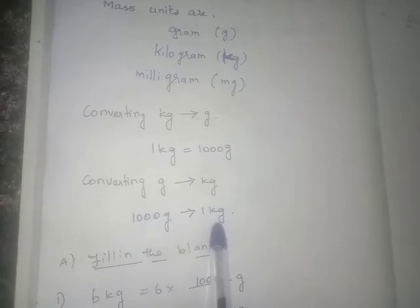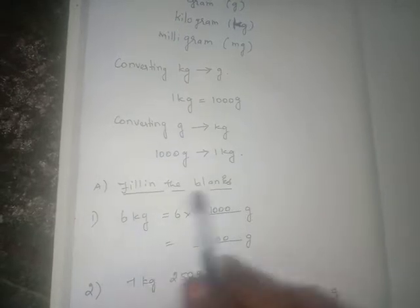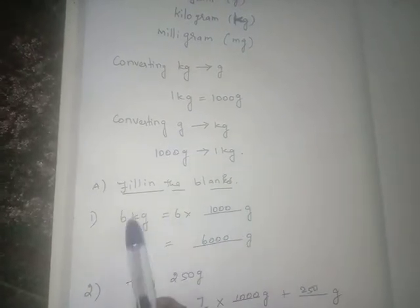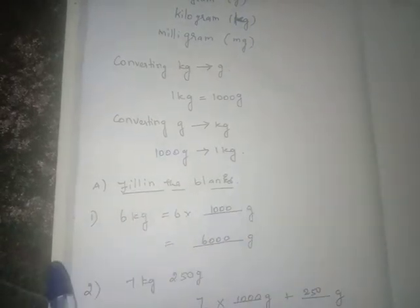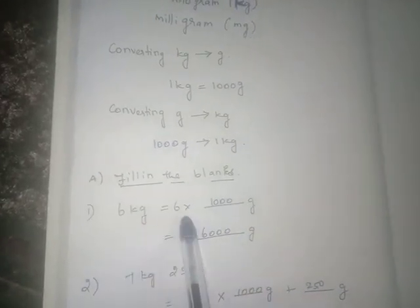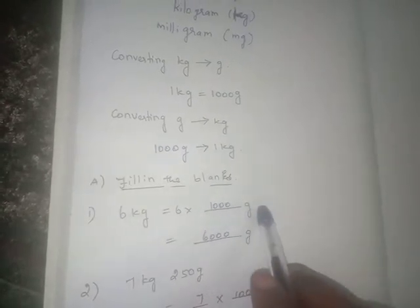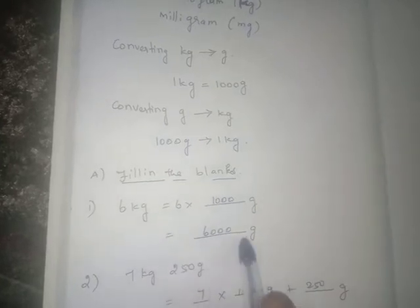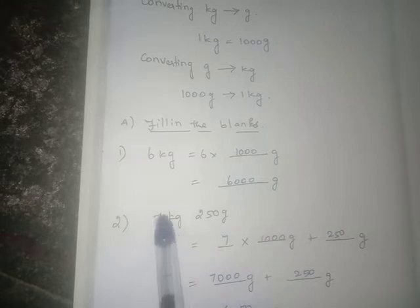Today's fill-in-the-blanks: six kilogram is equal to six into dash gram. Since one kilogram equals one thousand grams, six kilograms means six into one thousand grams. So the answer is six thousand grams.